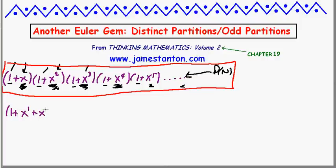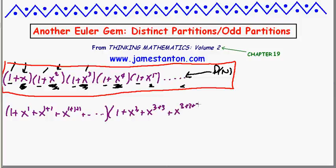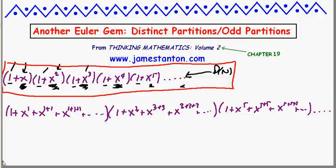For O(N), look at this infinite product: (1 + x + x² + x³ + ...) × (1 + x³ + x⁶ + x⁹ + ...) × (1 + x⁵ + x¹⁰ + x¹⁵ + ...) and so on forever — an infinite product of infinite sums, one for each odd number.